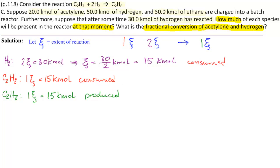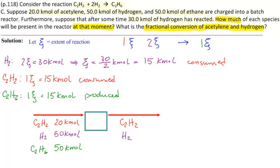So now we can write up our flowchart. We have a simple one-step reaction, and what's going in is C2H2, how much? 20 kilomoles. What else goes in? H2 at 50 kilomoles, and C2H6 at 50 kilomoles. We have the same things coming out, C2H2, H2, and C2H6.